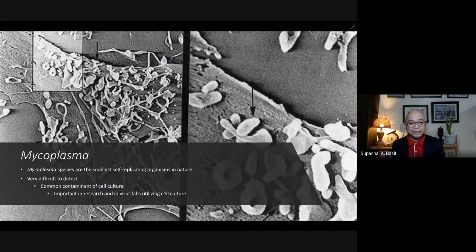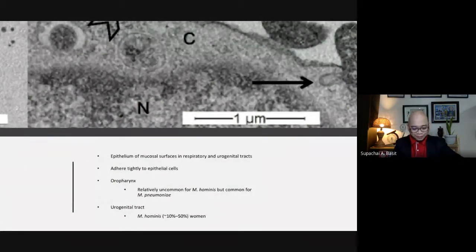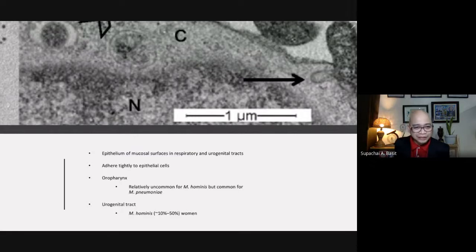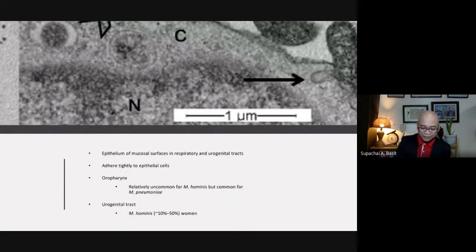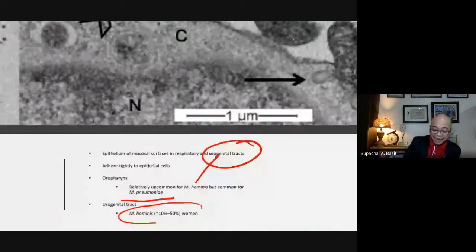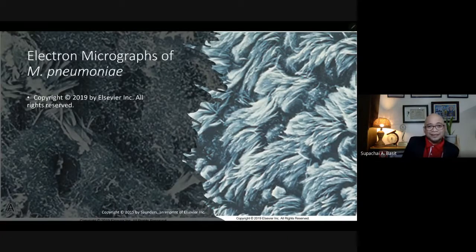This is how they look like under the electron microscope. The location of infection — they can infect mucosal surfaces in the respiratory and urogenital tract, primarily because they can adhere tightly to epithelial cells. In the oropharynx, Mycoplasma hominis is relatively uncommon since it is found mainly in the urogenital tract, but Mycoplasma pneumoniae is rather common there. Approximately 10 to 50% of women may possibly have Mycoplasma hominis in the urogenital tract.